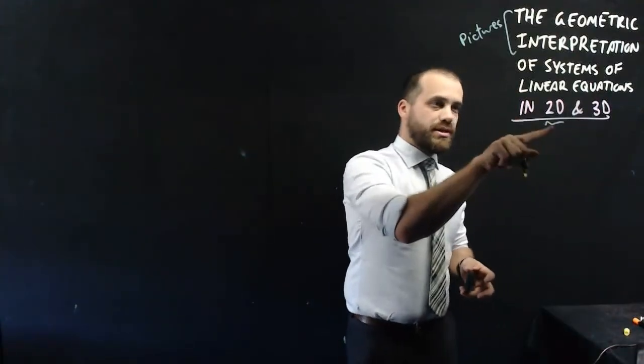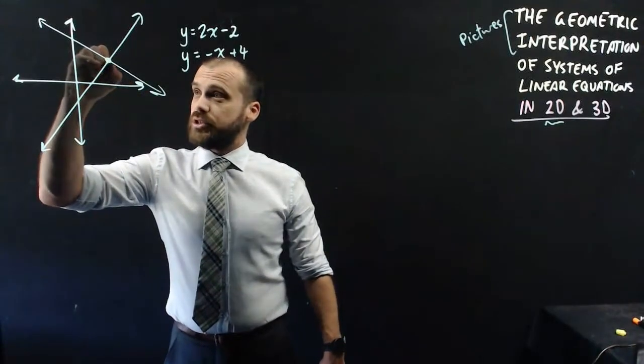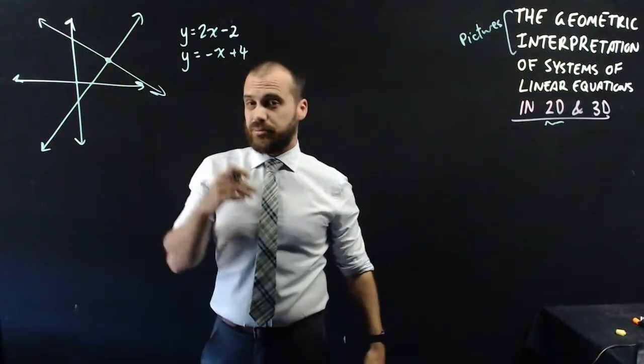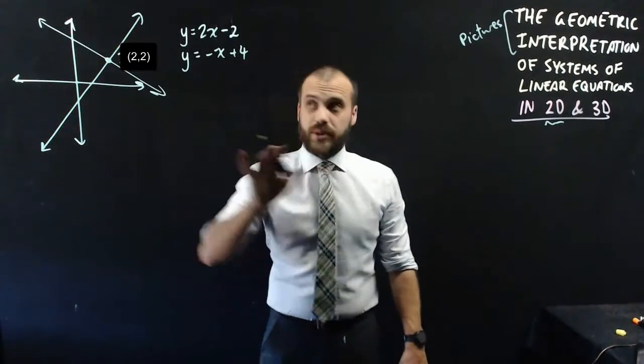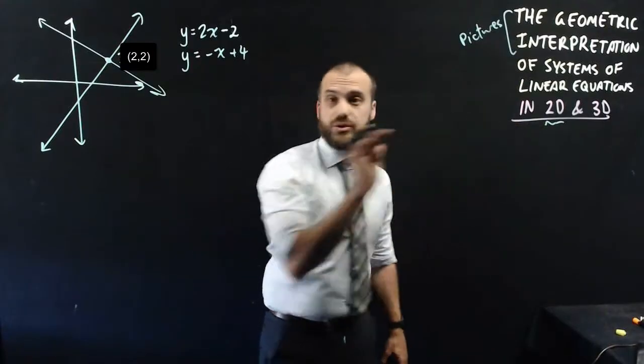Now you've done these in two dimensions before. Here's our system of linear equations, and you can see it results in two lines meeting in a single point. In this case, I think it's (3,2). But that's not the only thing that can happen when you have a system of two linear equations in two dimensions.